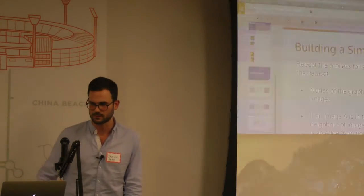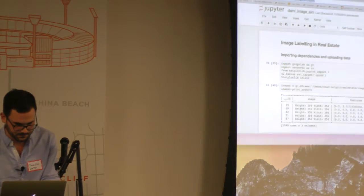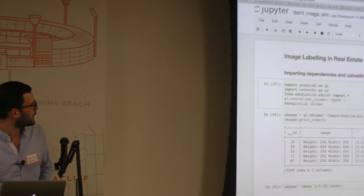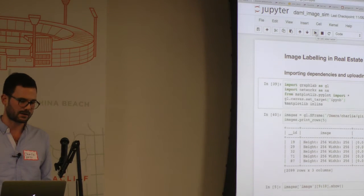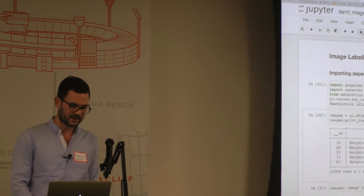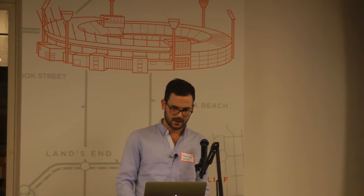I'm going to switch to a demo now. I'll start by importing GraphLab and NetworkX for plotting, and Matplotlib. I'm going to load my data, which is in an SFrame — our highly compressed data structure. The SFrame currently has an image ID, an image, and some features. For now, ignore those features — we'll get back to them in a second.